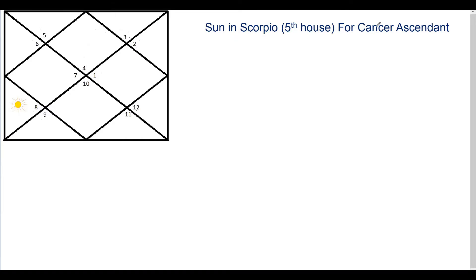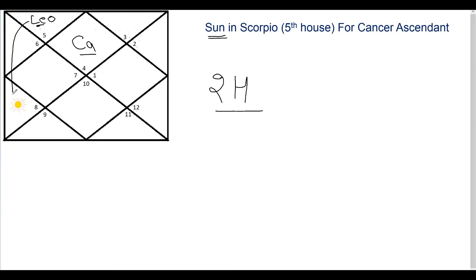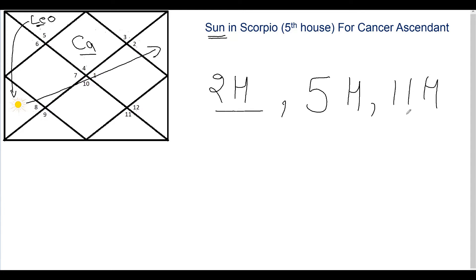Before we begin our analysis, let's see what all houses this placement of Sun is going to impact. Cancer is the ascendant sign, and Leo sign falls in the second house of the horoscope. Sun is the lord of Leo, so the second house affairs will be impacted by this placement — the lord of second is in the fifth house, so the fifth house is directly affected. At the same time, from this position Sun will have an aspect on the 11th house — the 11th as a seventh aspect — so all matters related to the 11th house will have a direct say.